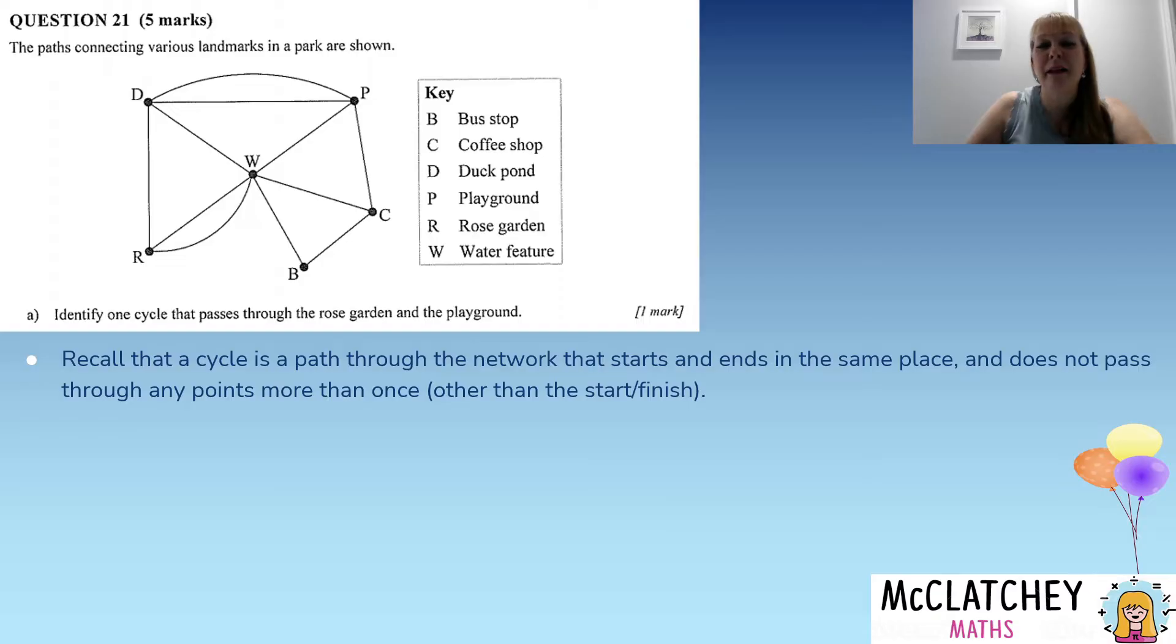We've got to make sure we hit that rose garden and the playground, so there's our rose garden, there's our playground. Now we don't need to go through every single point in the whole network in this situation, we've just got to identify a cycle that goes through both of these locations. So there could be multiple choices that you could have made, lots of possible cycles. You've only got to come up with one. So here are some of the possibilities that I found.